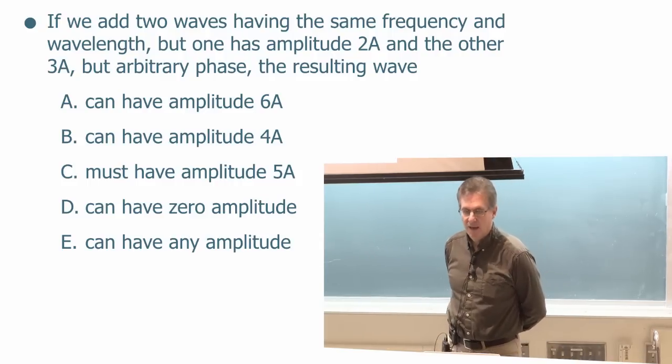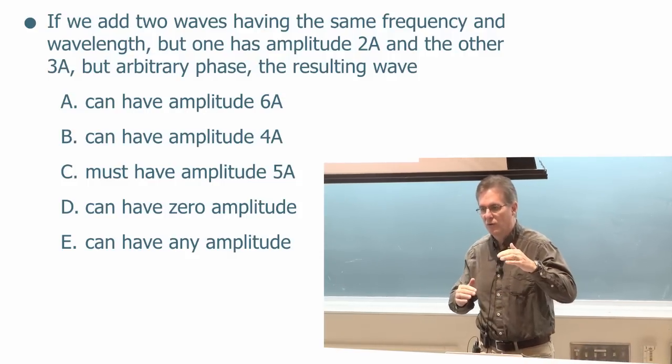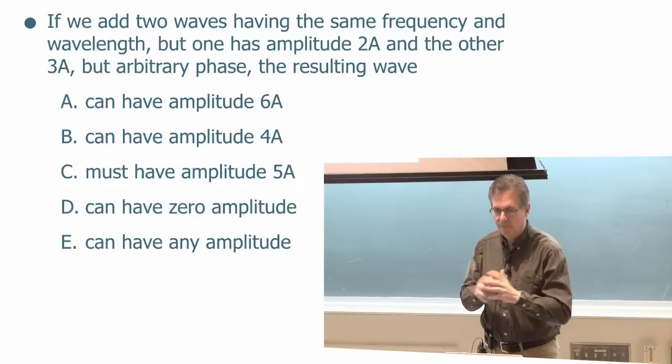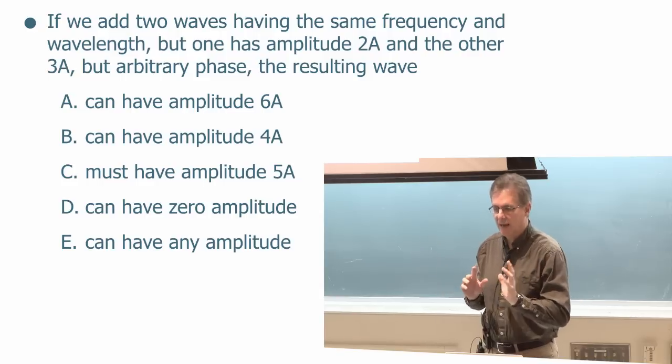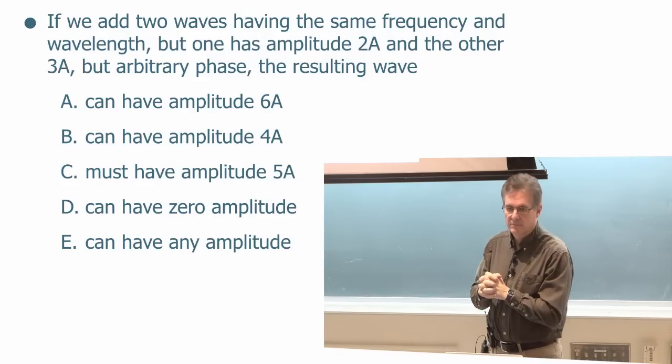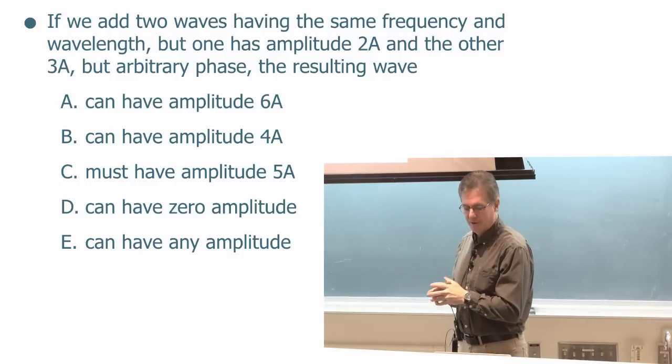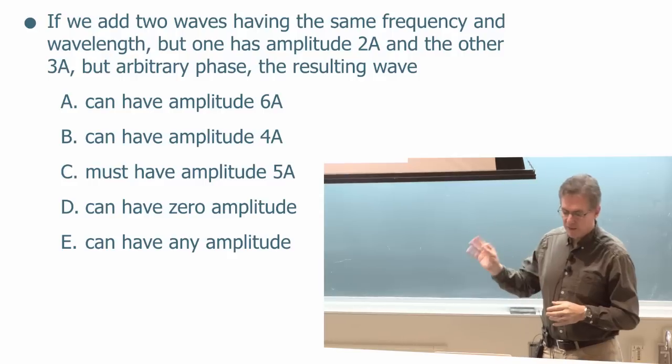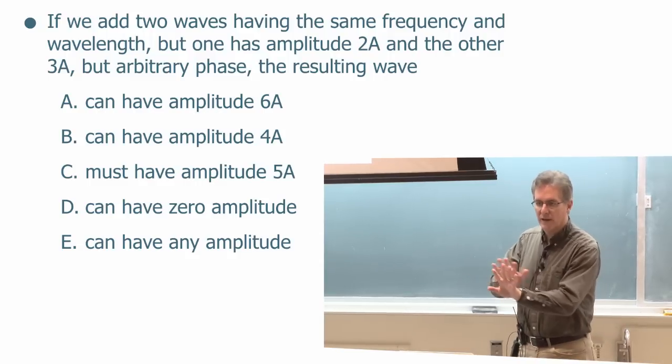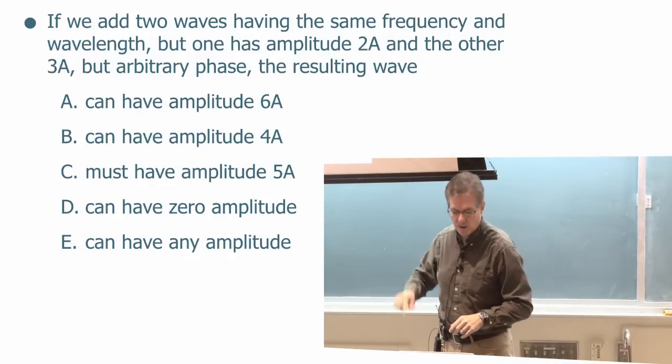Logically that one goes away. A, yeah, we can also eliminate that because there's no way you can add 2 and 3, 2a plus 3a and get 6a. 2 times 3 is 6, but we don't multiply and we're adding. Can it have amplitude 4a? Don't see why not. That must be the right answer, right? We don't even need to read the other answers. Well, must it have amplitude 5a? 2 plus 3 is 5a. No, we just saw that as you shift the phases, you can get bigger and smaller amplitudes.